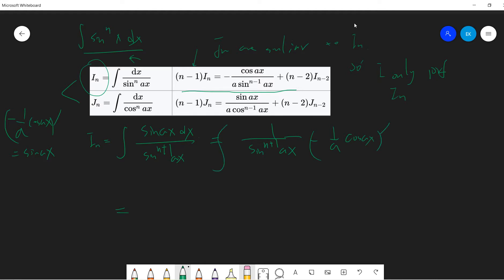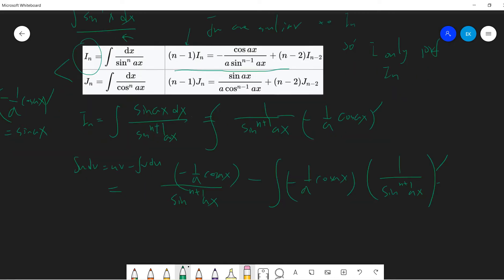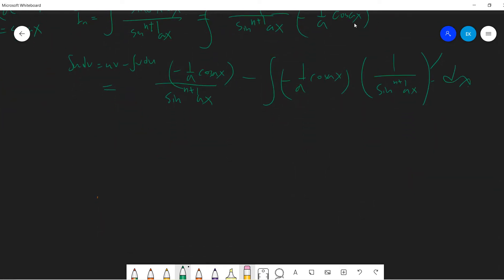Okay, and I use the integration by parts. So let me remind u dv equals to uv minus v du. So this is sine^(n+1) ax minus negative a cosine ax minus this one. Right, and this is the derivative of this, one over sine^(n+1) ax. Okay, and I should say dx.